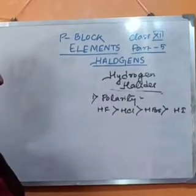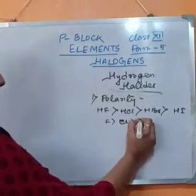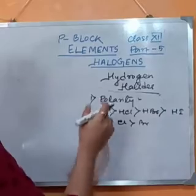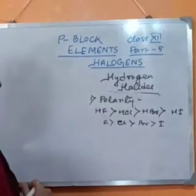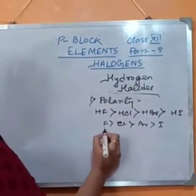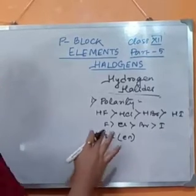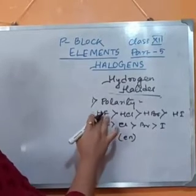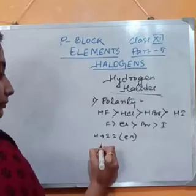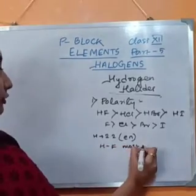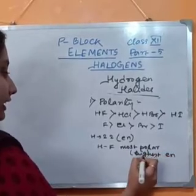Now why? What is the reason behind it? The electronegativity order of the halogens is that fluorine is the most electronegative and as we move down the group the electronegativity decreases. The electronegativity of hydrogen is constant in case of hydrogen halides and is around 2.2. Since the electronegativity of fluorine is the most among the halogens, the electronegativity difference between hydrogen and fluorine will be the most. As a result, the HF bond is most polar due to the highest electronegativity difference.